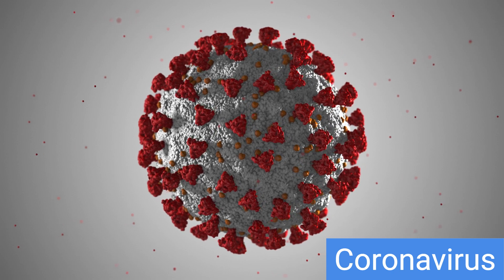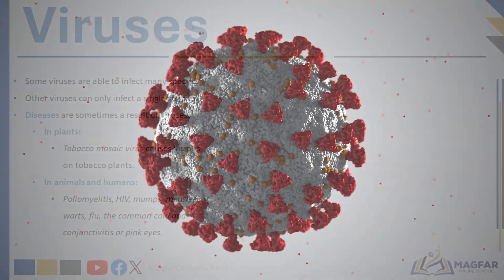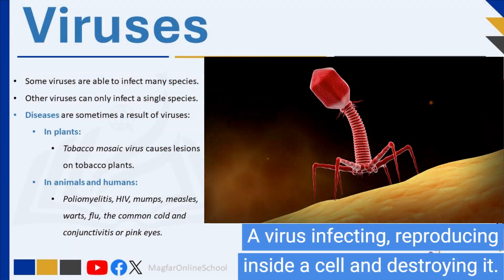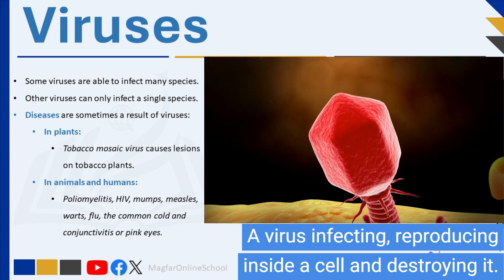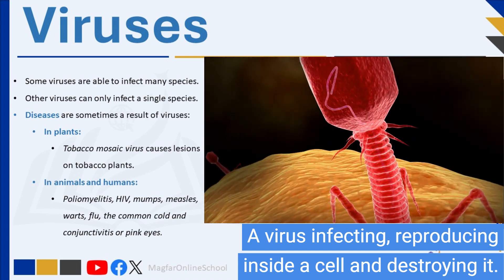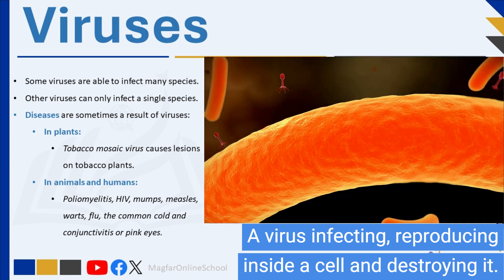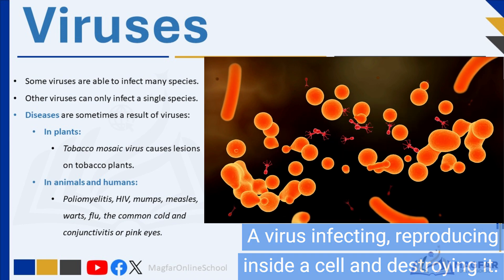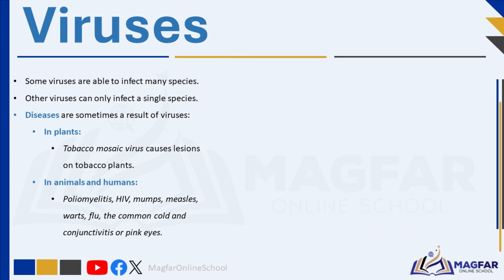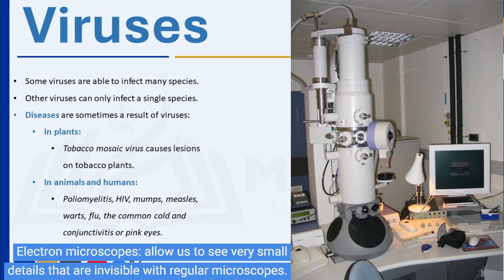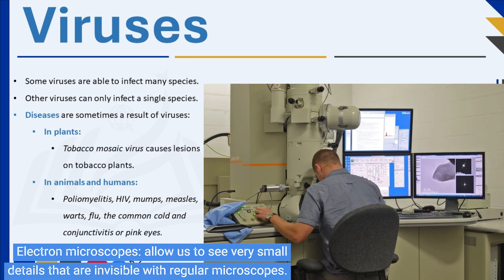Some viruses are able to infect many species while others can only infect a single species. Viruses are found everywhere on earth and are parasites that can only multiply inside a host. They reproduce by using materials from the host cell they have infected, and in this process they destroy the host cell. Because of this, viruses cannot be regarded as living organisms. Viruses are also extremely small and can only be observed by means of an electron microscope.